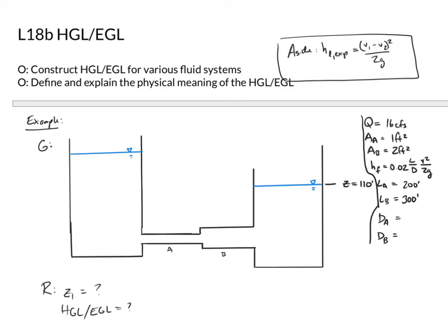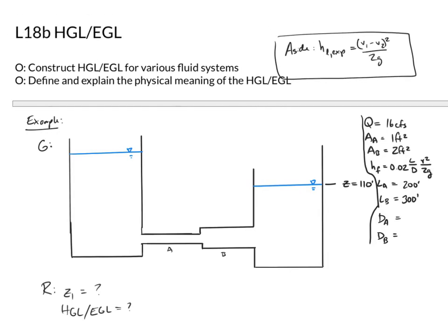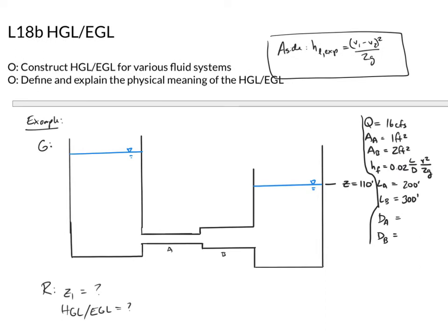Now we're going to get to work on some problems. What I want to focus on is this aside where I say the head loss in expansion is (v1 minus v2) squared over 2g. We're going to use that a good bit, especially in this first problem.